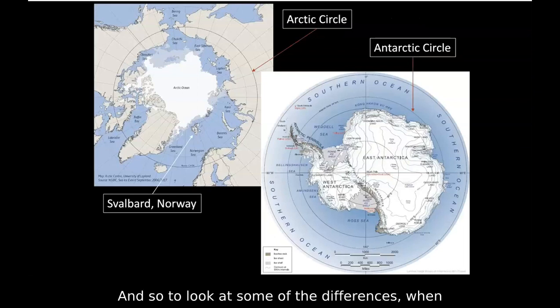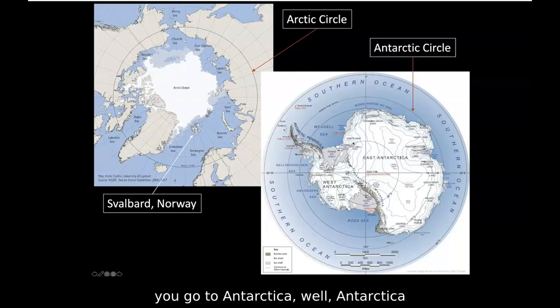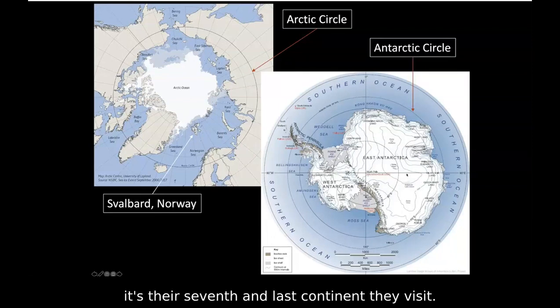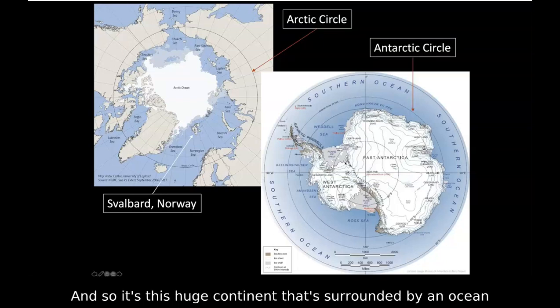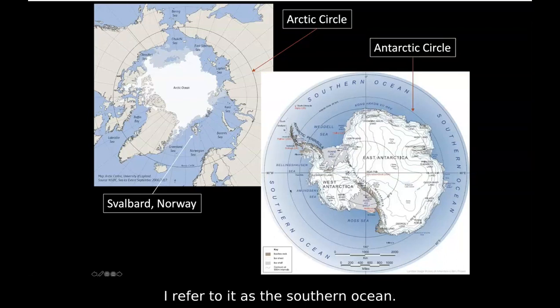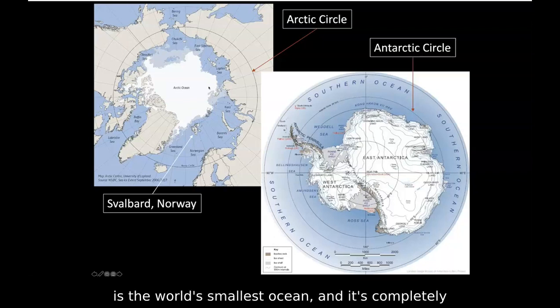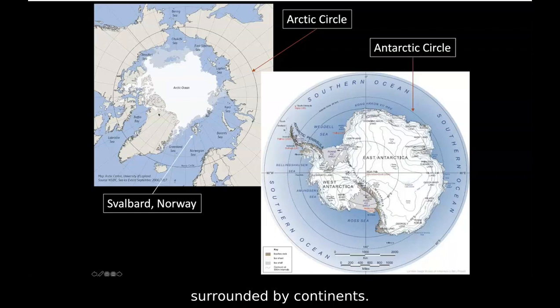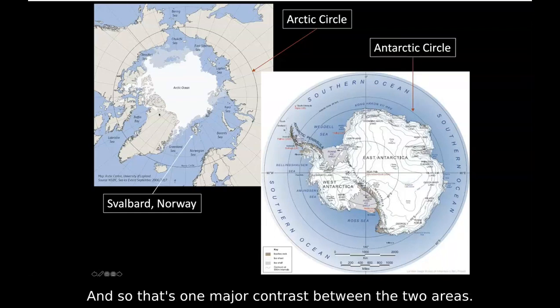Looking at some of the differences: when you go to Antarctica, it's this huge continent surrounded by the Southern Ocean. If you go to the Arctic, the center of the Arctic is the world's smallest ocean, completely surrounded by continents. That's one major contrast between the two areas. Most people who do a trip to Antarctica visit the Antarctic Peninsula.